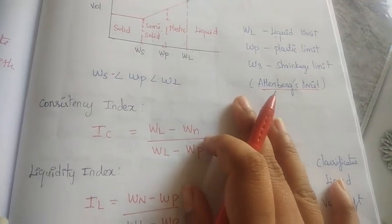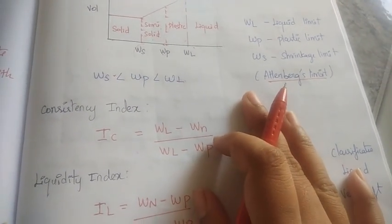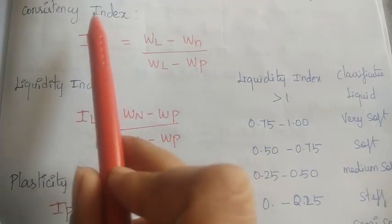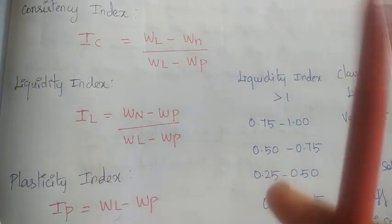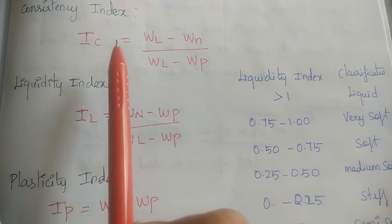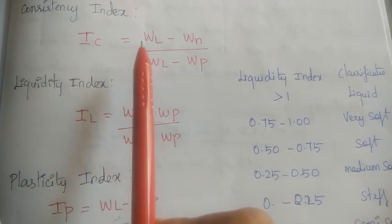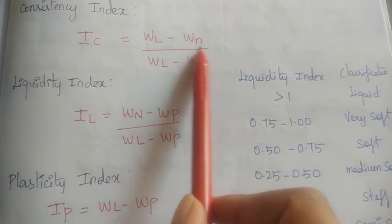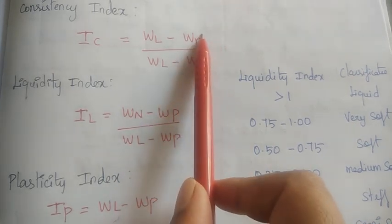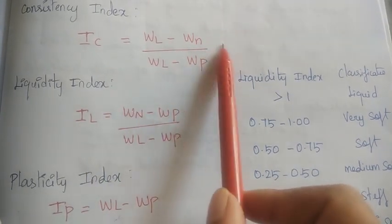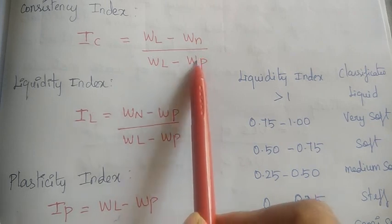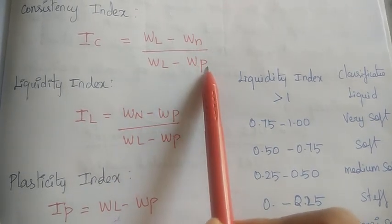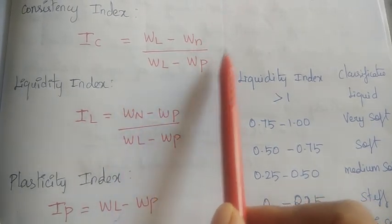Next, we look at consistency index. Consistency index IC is a formula. Consistency index IC equals liquid limit minus natural water content, divided by liquid limit minus plastic limit.